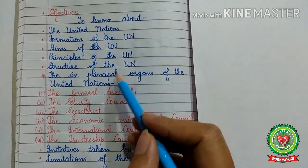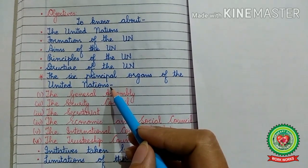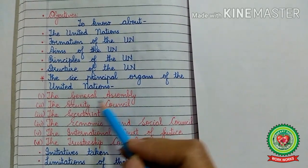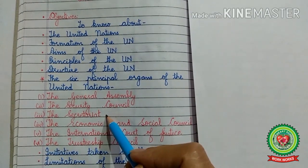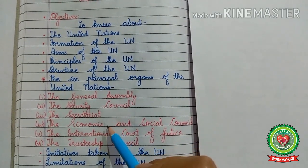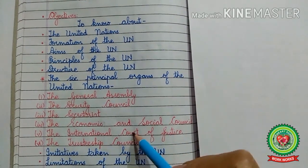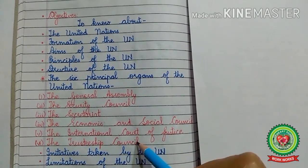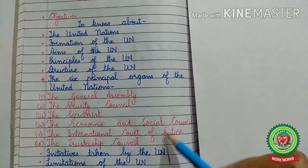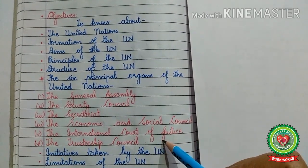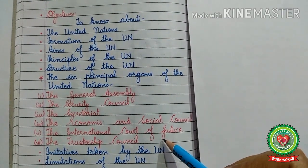In the structure of the UN, we had discussed about the principal organs of the United Nations, which included the General Assembly, the Security Council, and the Secretariat. Today we are going to discuss about the Economic and Social Council, the International Court of Justice, and the Trusteeship Council.